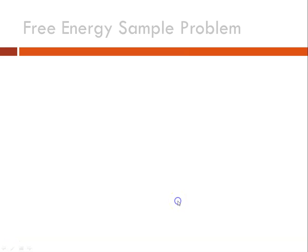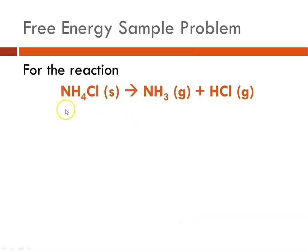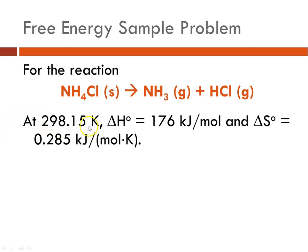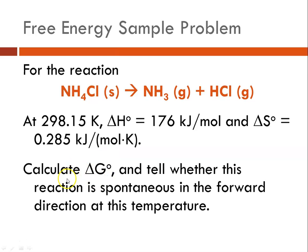So let's look at a sample problem. So here's a free energy calculation sample problem. For the reaction, ammonium chloride solid decomposes to ammonia gas and hydrogen chloride. At 298.15 kelvin, the delta H for the reaction is 176 kilojoules per mole, that's endothermic, and delta S is 0.285 kilojoules per mole. Calculate delta G and tell whether the reaction is spontaneous in the forward direction at this temperature.